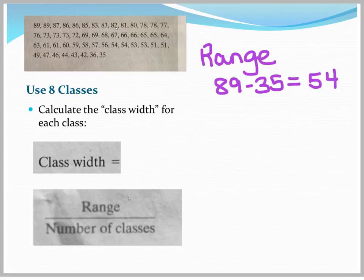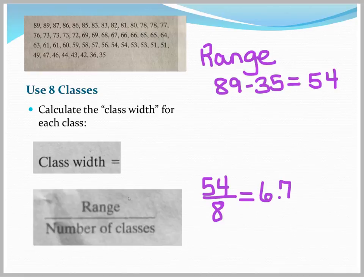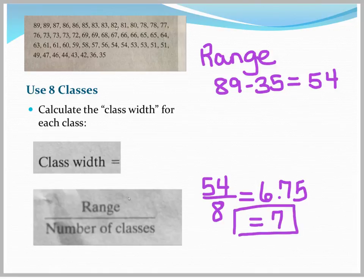So in order to determine how wide our classes should be for each of our 8 classes, we would take 54 and divide by 8. That does not come out evenly, but comes out as 6.75. So in this case, we round up to 7. So our class width should be 7.